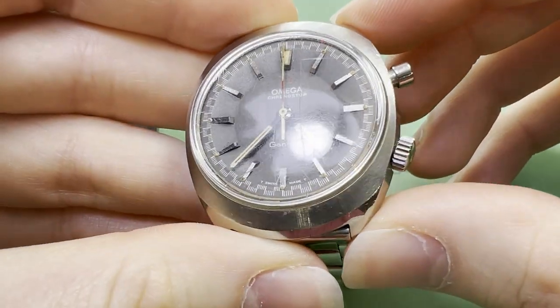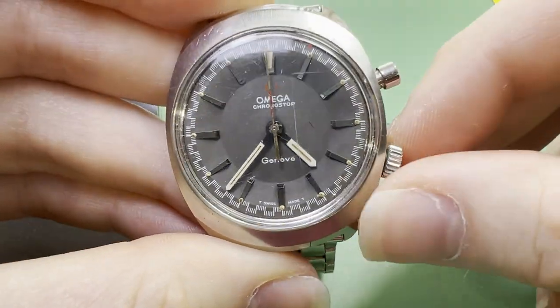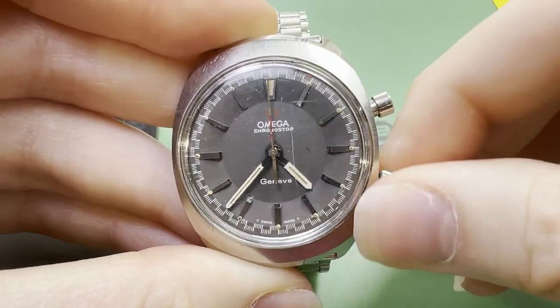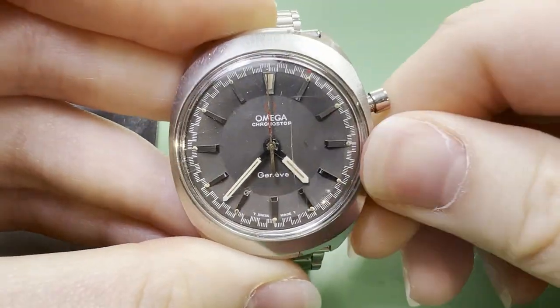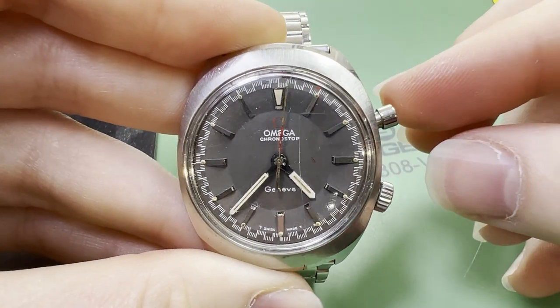Hello again, today we have a 1960s Omega Chronostop, a watch that has running hour and minute hands, but the seconds hand is a chronograph seconds that can be started and stopped using the one pusher at two o'clock.